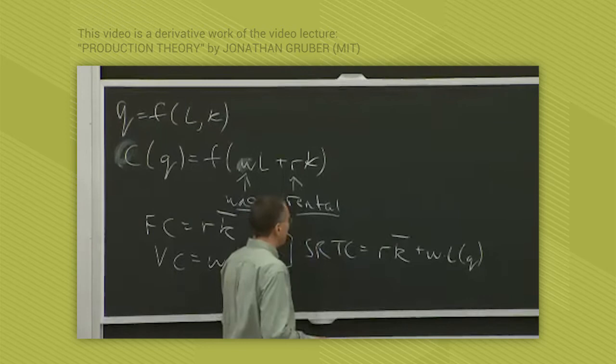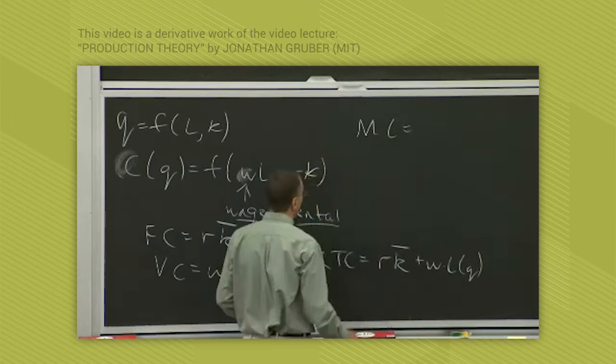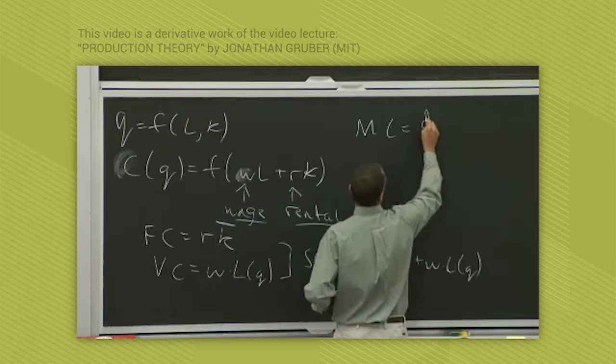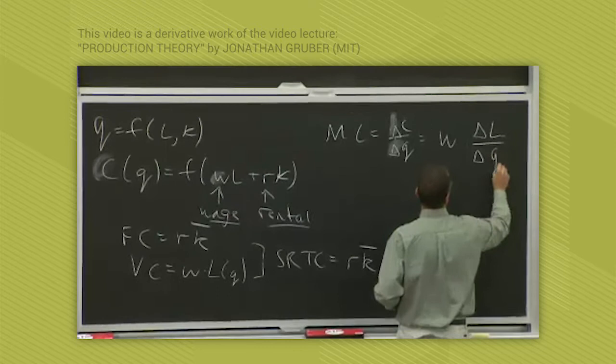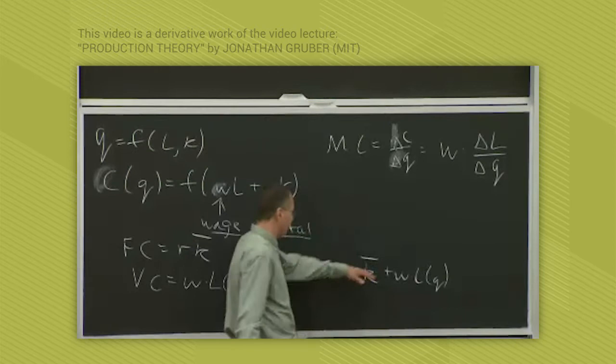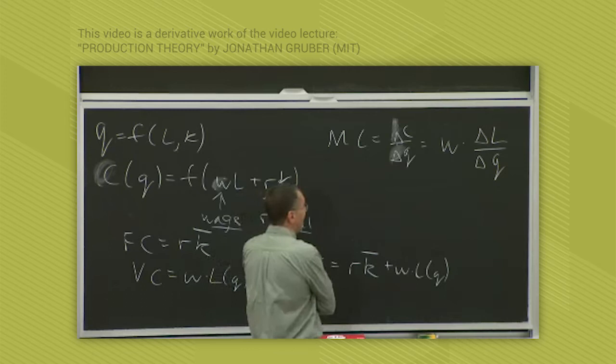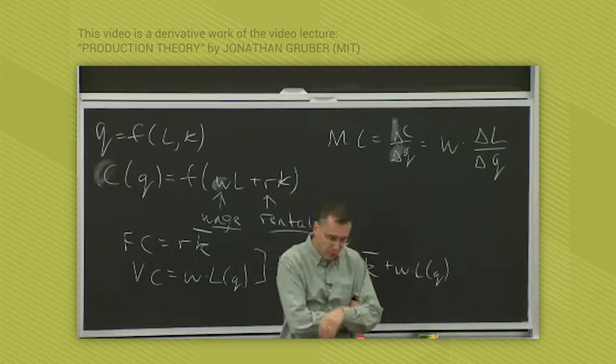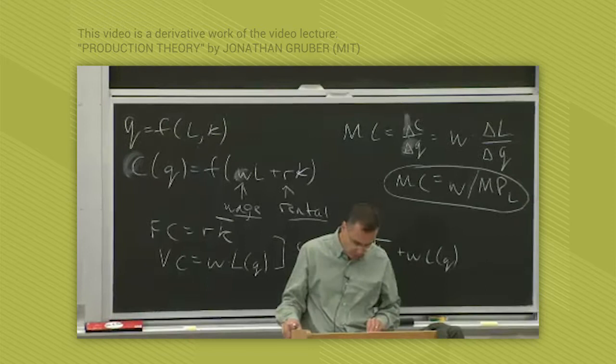This implies that the marginal cost, the key concept we want to work with - marginal cost, which is the derivative of total cost with respect to quantity, so dC/dQ - is going to be equal to W, or let's do it in deltas because we're not doing calculus here. Delta C over delta Q is going to be W times delta L over delta Q. That's going to be the marginal cost. The marginal cost, so I'm just differentiating the total cost function, is going to be the wage times delta L over delta Q. So the marginal cost of producing the next unit is going to be how much labor I have to use to produce the next unit times the wage I pay per unit of labor. So the marginal cost is the wage over the marginal product of labor. The marginal product of labor is delta Q over delta L. So wage over the marginal product of labor is the marginal cost.